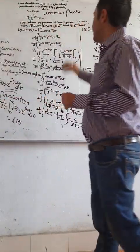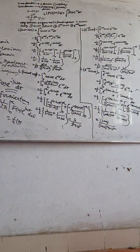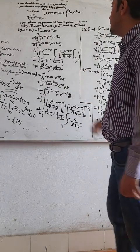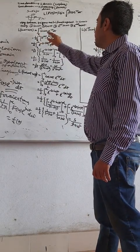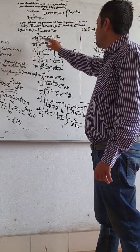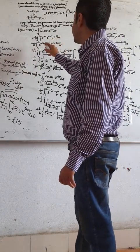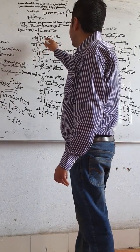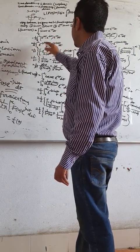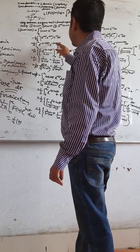For sine of omega t times u(t): sine of omega t equals e to the power j omega t minus e to the power minus j omega t, divided by 2j. Multiplying by e to the power minus st and integrating, after combining exponents it becomes e to the power minus (s minus j omega)t minus e to the power minus (s plus j omega)t.